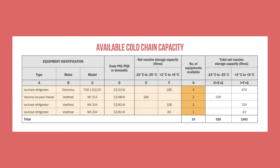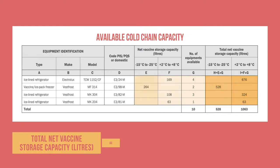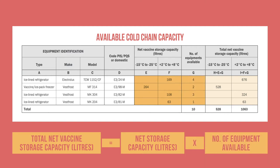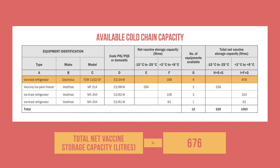Specify how many pieces of each equipment type you have available. Then, for each type of equipment, calculate the total net vaccine storage capacity by multiplying the net vaccine storage capacity of each type of equipment by the number of pieces of that equipment. For example, one type of ice-lined refrigerator holds 169 litres.